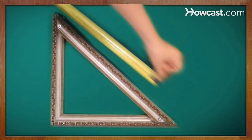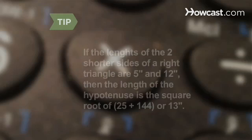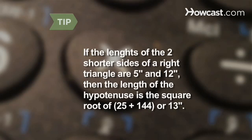Step 3. Add the squares together and take the square root of the result using a calculator. The resulting value is the length of the longest side, which is called the hypotenuse. If the lengths of the two shorter sides of a right triangle are 5 inches and 12 inches, the length of the hypotenuse is the square root of 25 plus 144, or 13 inches.